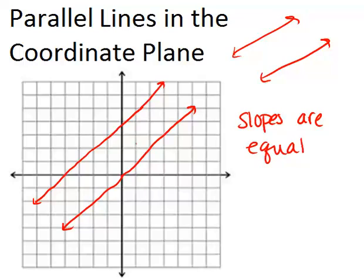If we look at this example, these two lines are parallel, and each line has a slope of 1.